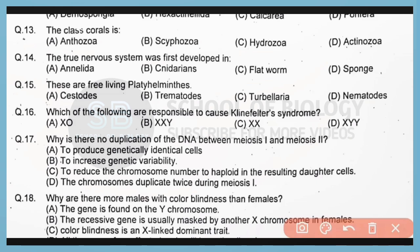Question 13. The class of corals is Anthozoa. Correct answer is option A. Anthozoa contains different types of corals.